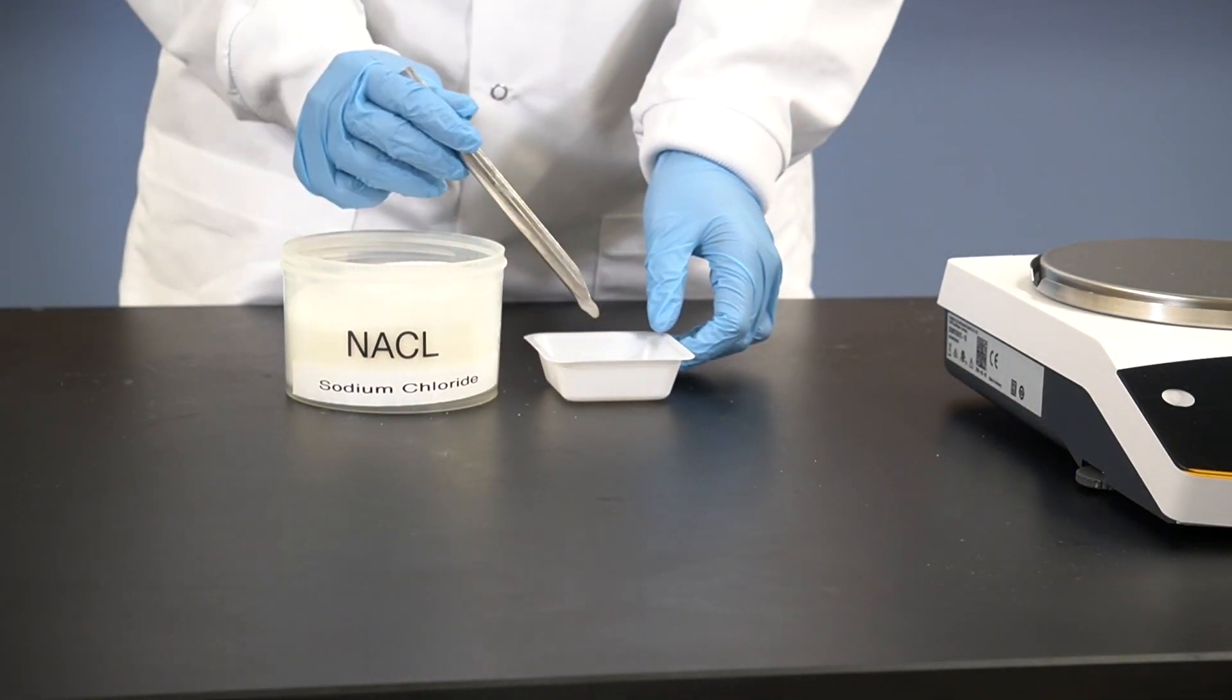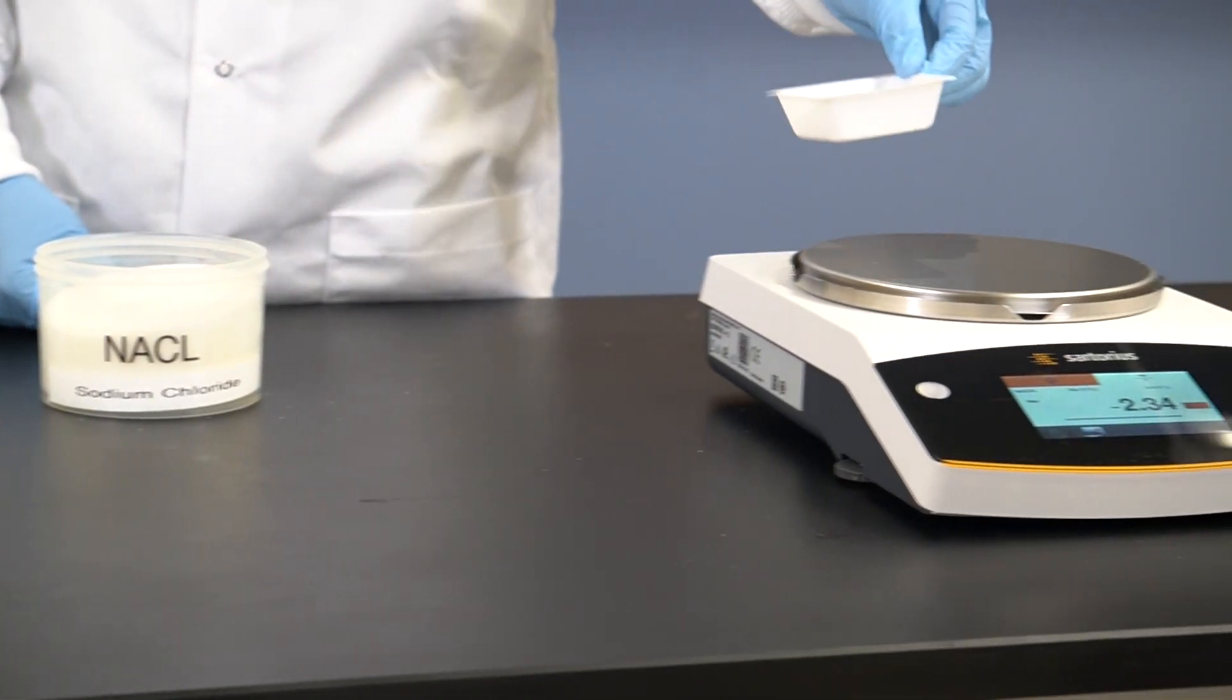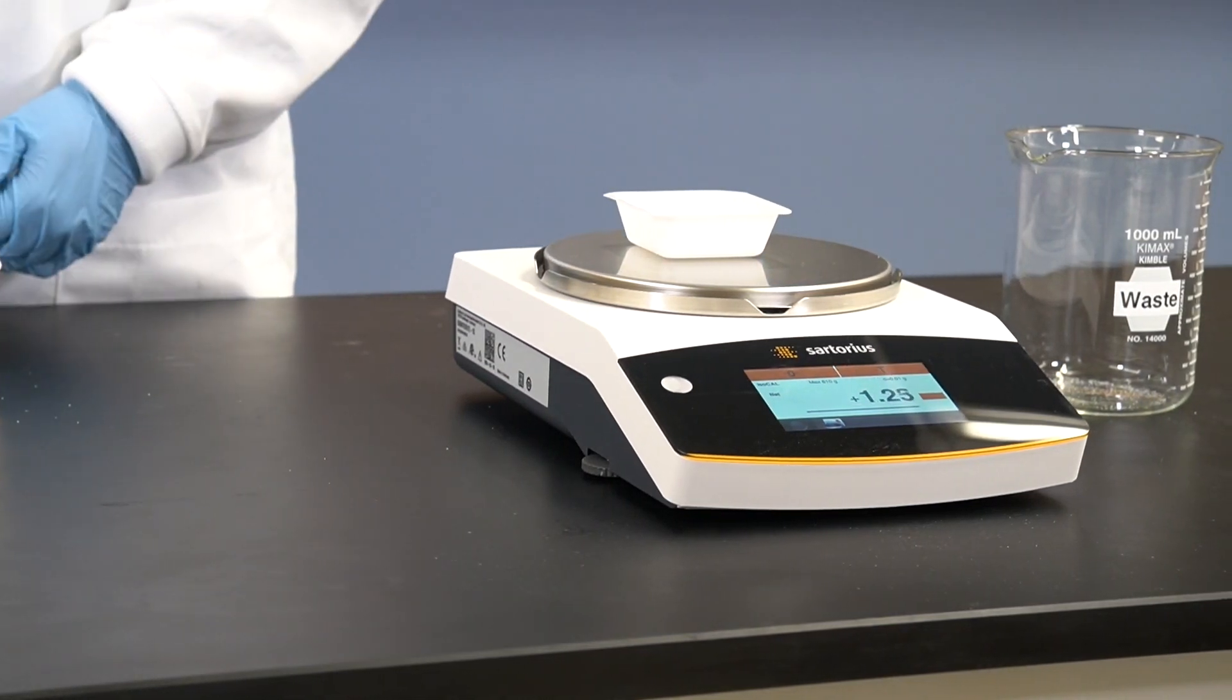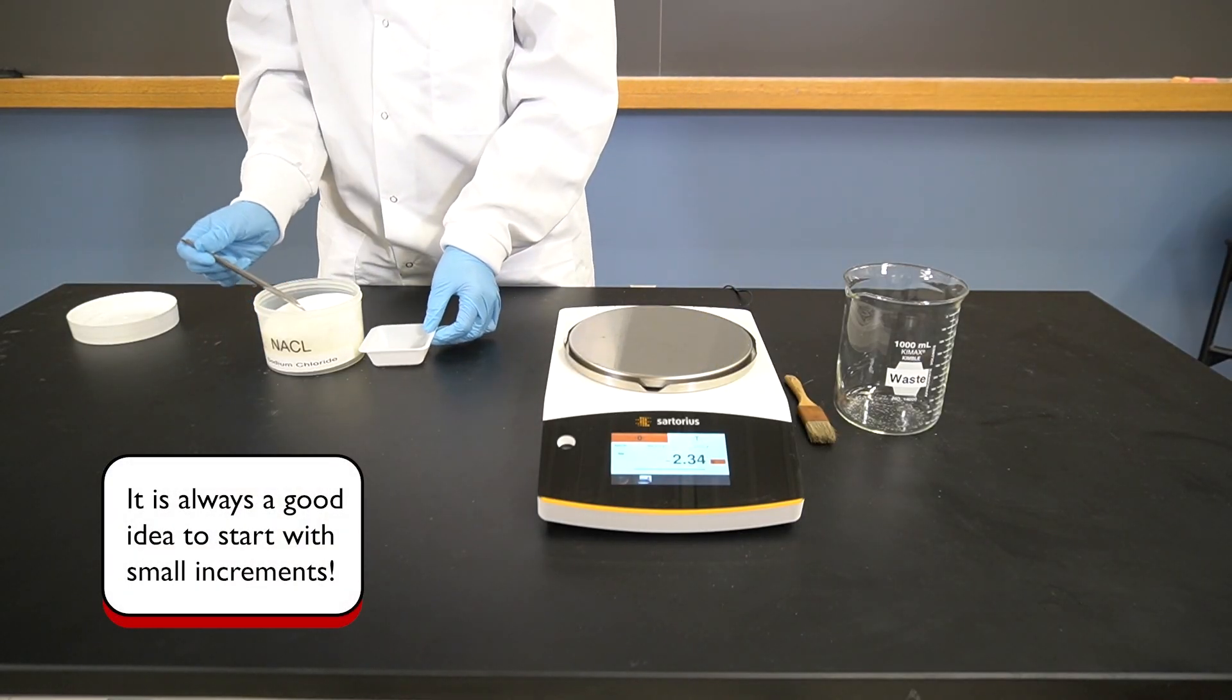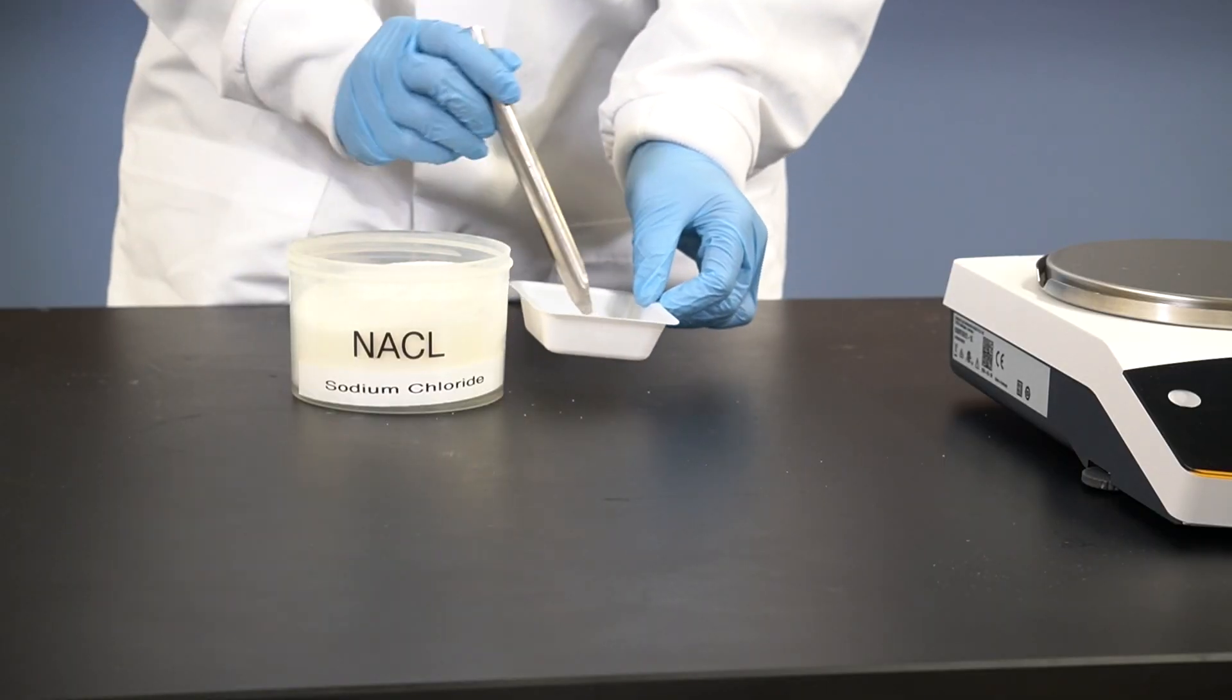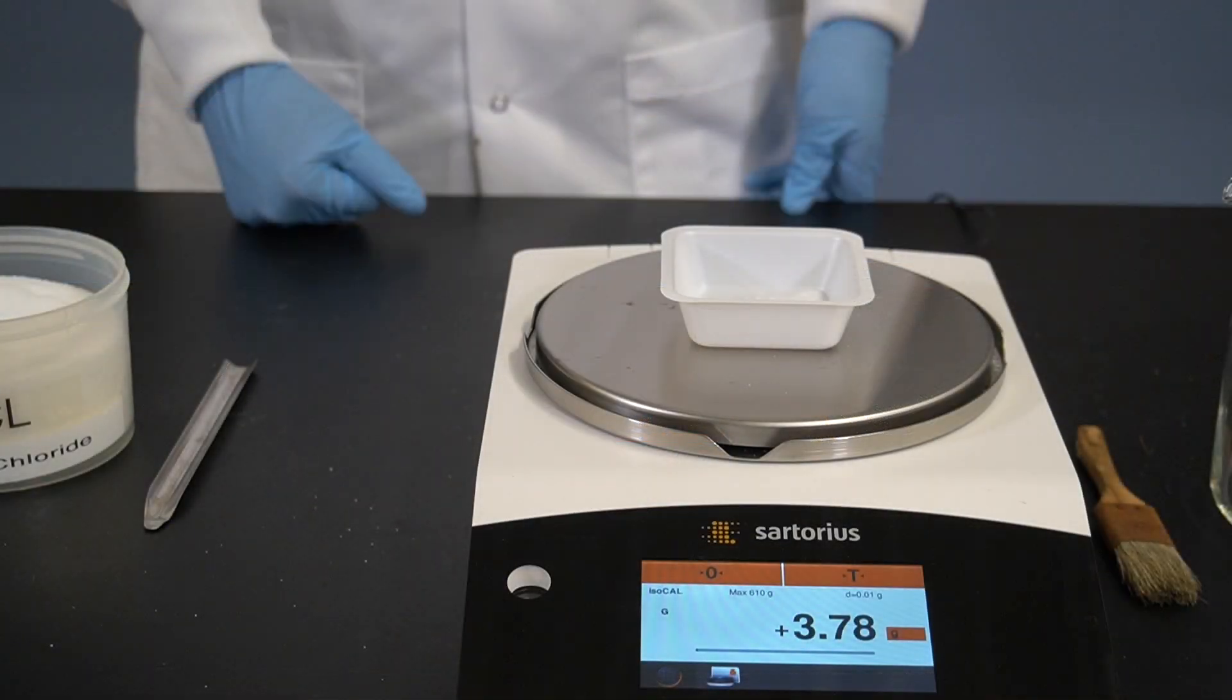If it is the first time you are weighing a specific compound, you might not know how much 2 grams is. So, it is always a good idea to add samples in small increments using a spatula. Place the boat with the sample back on top of the balance carefully. Wait for the reading to stabilize.